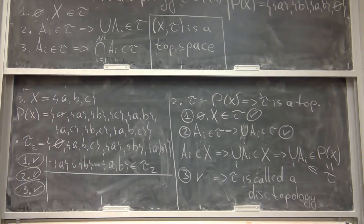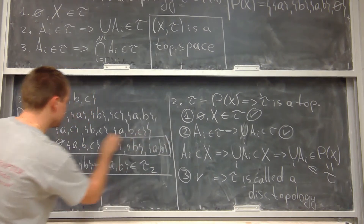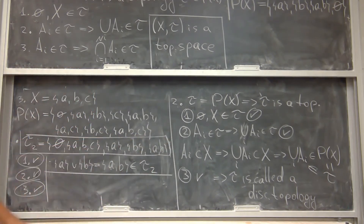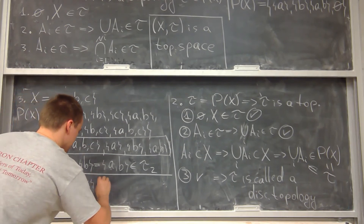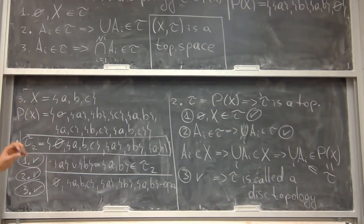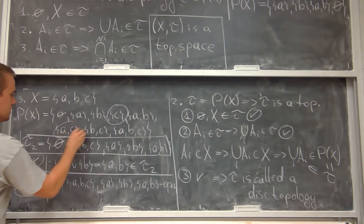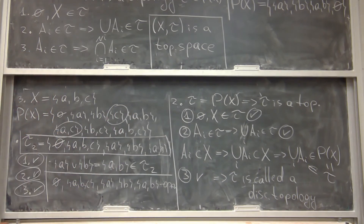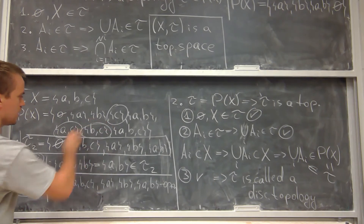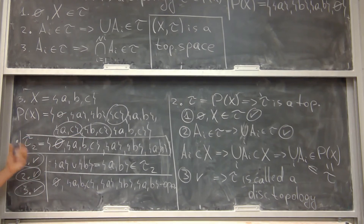Let's discuss open and closed sets in this context. In τ₂ we have five elements: ∅, {a}, {b}, {a,b}, {a,b,c}. All five of these are called open sets. The elements of P(X) that do NOT belong to τ₂ — namely {c}, {a,c}, and {b,c} — are called closed sets, because they are complements of open sets.